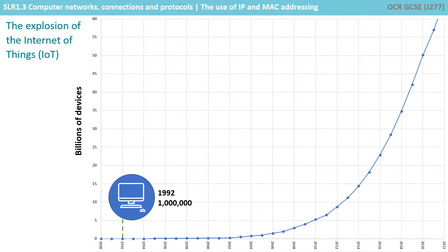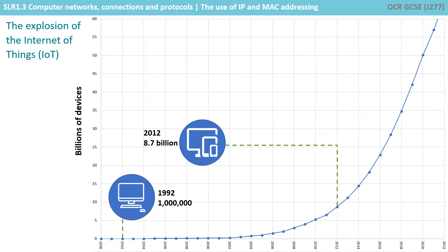The 4 billion possible addresses available for use by IPv4 sounds like a lot, but a quick look at this graph shows a problem. Back in 1992, there were around 1 million devices connected to the internet, each with their own IP address. By 2012, with the advent of smartphones, wireless tablets, laptops, and many other connected devices, the number shot up to almost 9 billion.